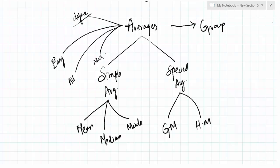And the most important point is this average should be the nearest to the most of the items in the data. So this is about the measure of central tendency and average. In the next session, I will explain what is simple average. We call it as arithmetic mean.